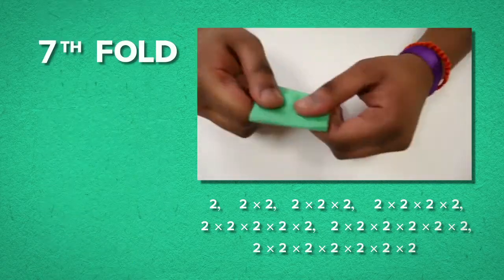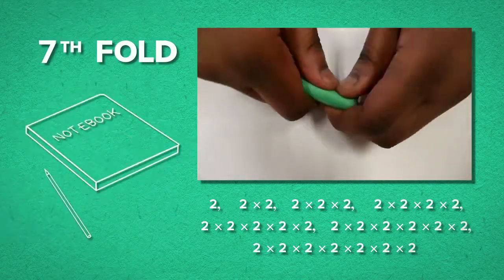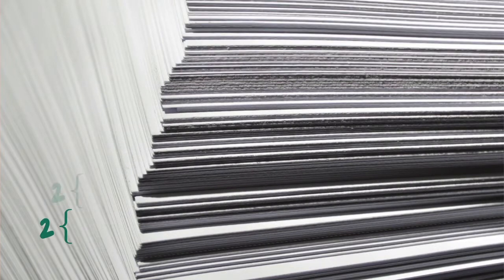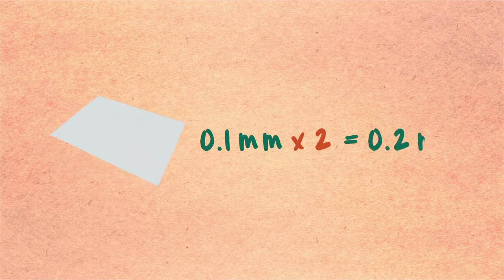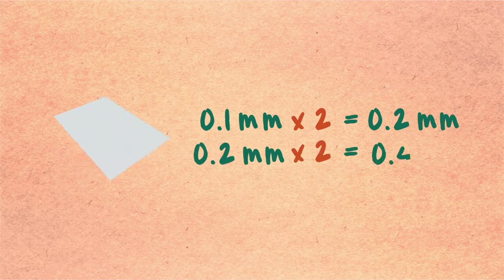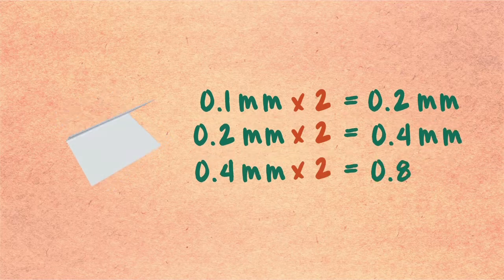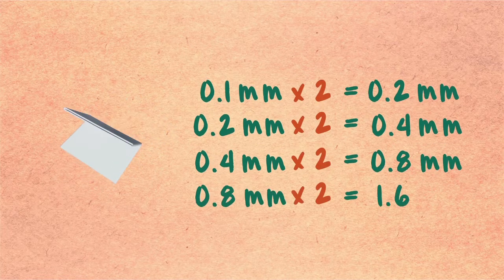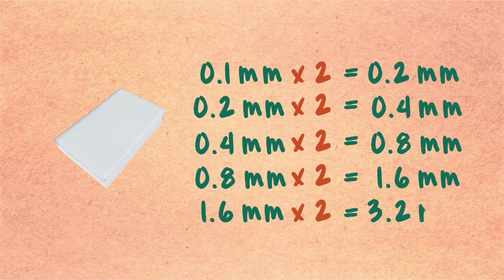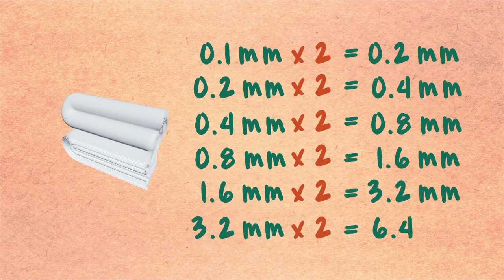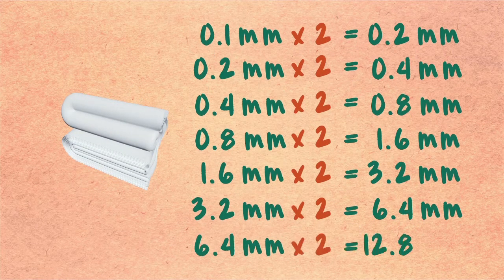By the seventh fold, the paper would be as thick as a notebook. The thickness of the paper itself forms a geometric sequence with a constant ratio of 2: 0.1 mm, 0.2 mm, 0.4 mm, 0.8 mm, 1.6 mm, 3.2 mm, 6.4 mm, and 12.8 mm.